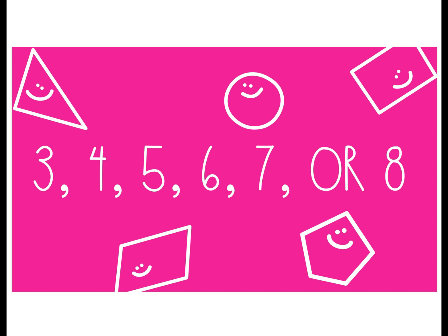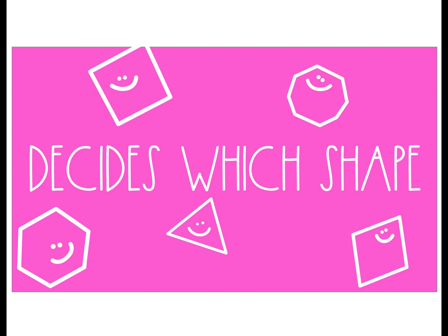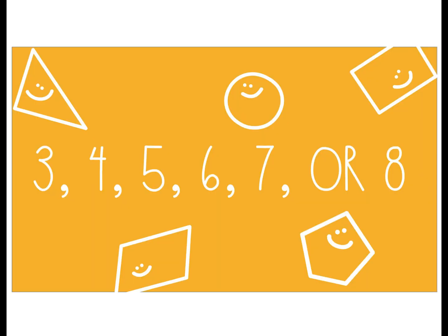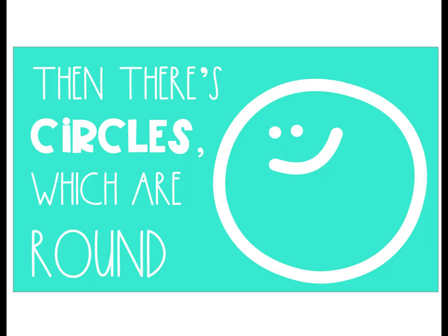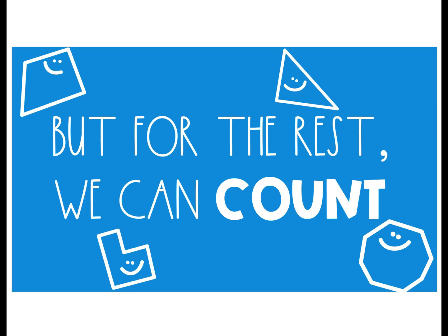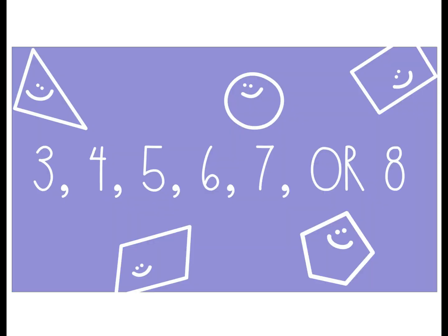3, 4, 5, 6, 7, or 8 decides which shape. Then there's circles which are round, but for the rest, we can't count: 3, 4, 5, 6, 7, or 8.